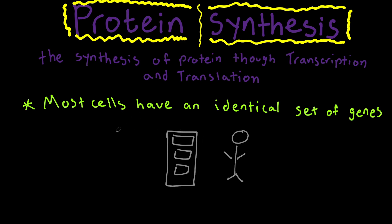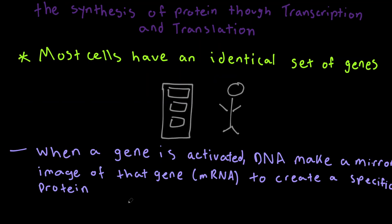Liver cells use their information for synthesizing the functions of the liver, while the brain uses its information for the functions of the brain. You might be wondering why genes are relevant to protein synthesis. When a gene is activated, the DNA will make an identical version of that DNA, which will be our messenger RNA, or mRNA. And that mRNA creates a specific protein, which we'll talk about.